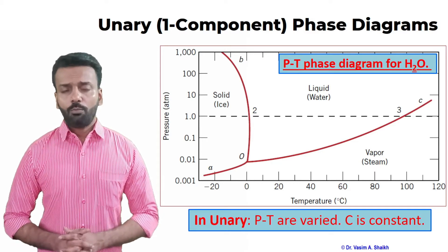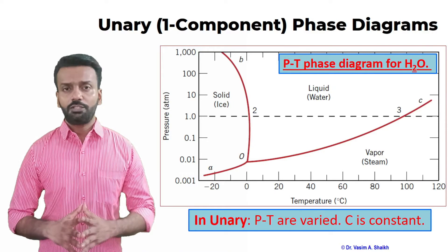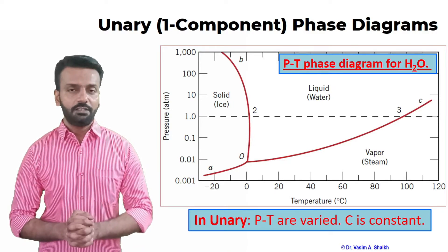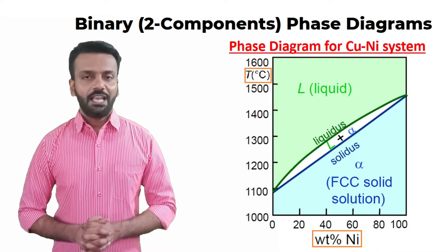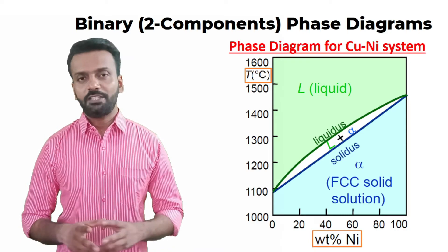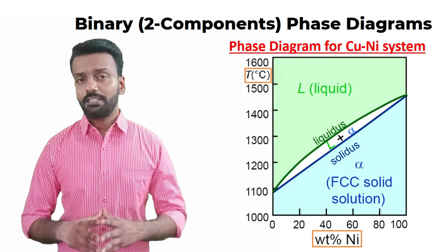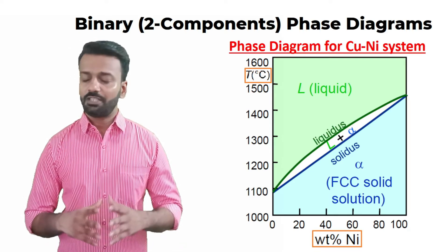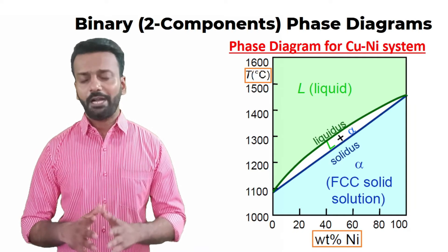This is a one-component phase diagram because the component here is water, H₂O, which is a single component — that is why it is called a unary phase diagram. The next phase diagram is the binary phase diagram, which is the most important as far as examinations are concerned. In most examinations, two-component phase diagrams are asked.